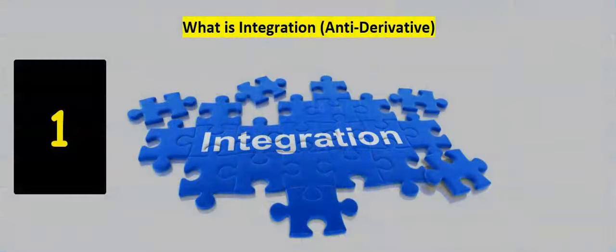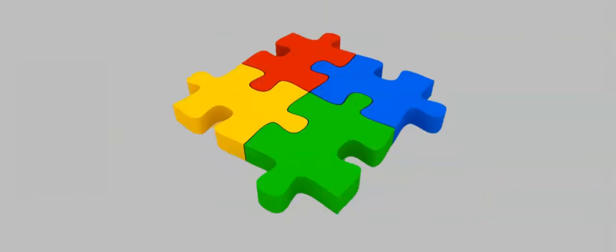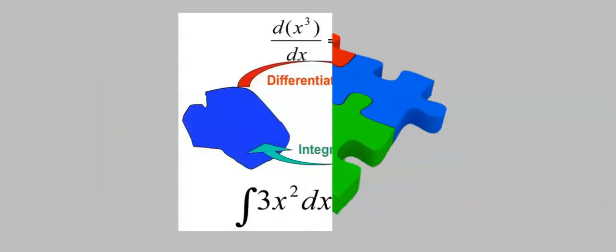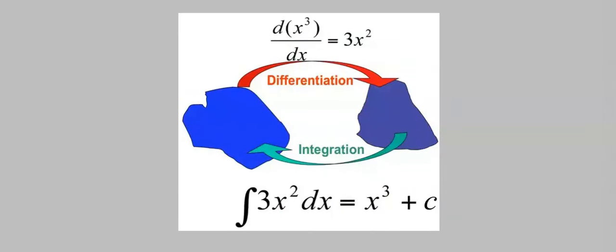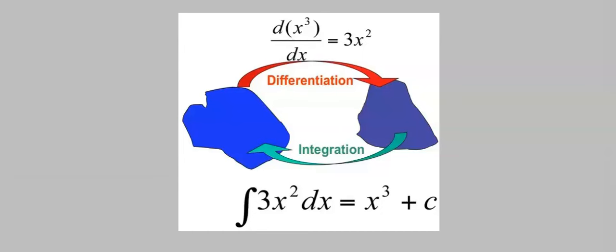Integration brings together components into a single system that functions as one. Integration opposes differentiation and is at times called the anti-derivative. In this video we are going to keep it simple to understand one of the differences between differentiation and integration.